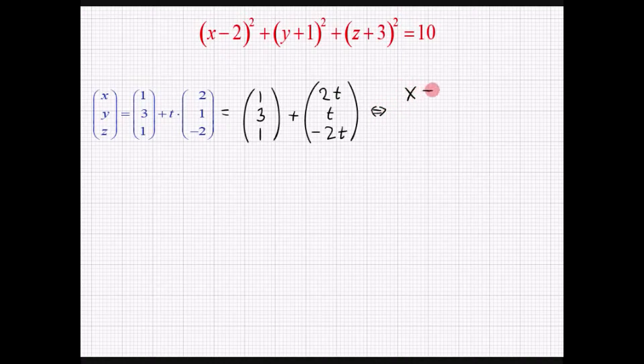x er altså lige med 1 plus 2 gange t. y er altså lige med 3 plus t. Og z er lige med 1 minus 2 gange med t.